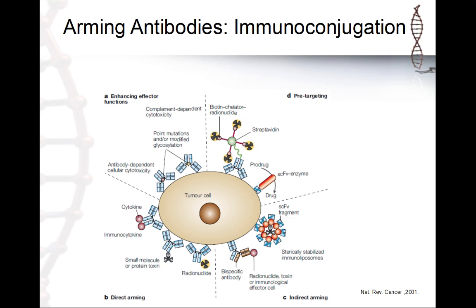You can also use the antibody as a 'postman' — this is called immunoconjugation, where you are arming the antibody. You attach, for example, a toxin, cytokine, or radioactive molecule to target a tumor cell. The cell can internalize it and then be destroyed. This is really really impressive.